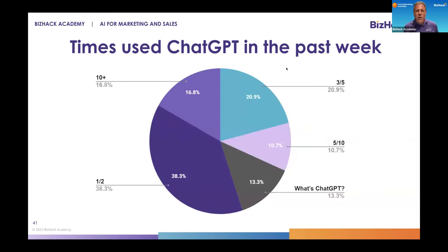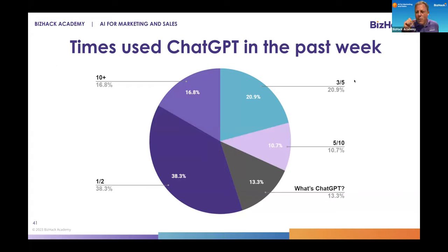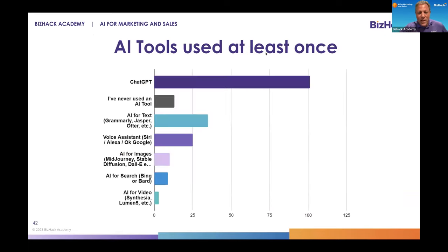The next poll question was how many times you've used ChatGPT in the past week. 25% of you have used it five or more times, 38% one or two times, and about 20% three to five times. 13% are still wondering what ChatGPT is. ChatGPT is the easiest, most accessible, most popular tool for AI for text. Just Google 'ChatGPT,' log in, and use it — it's just a chatbot, really easy to use. As a result, more than 100 of you have used that tool more than any other.